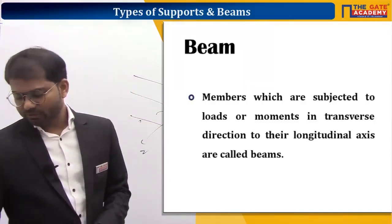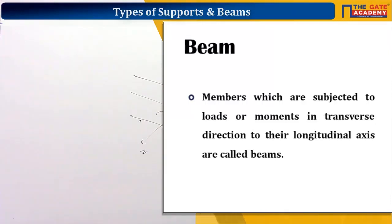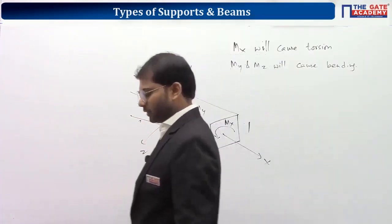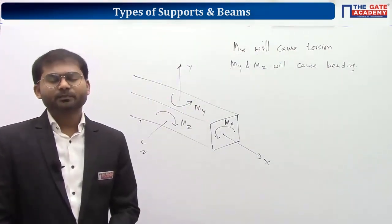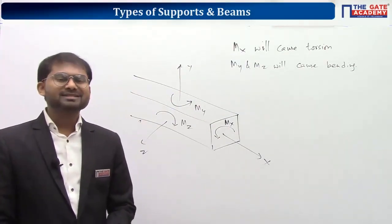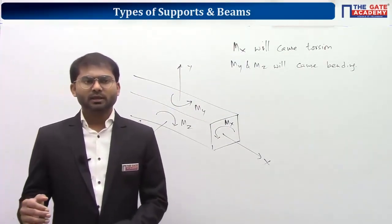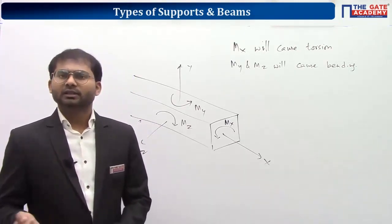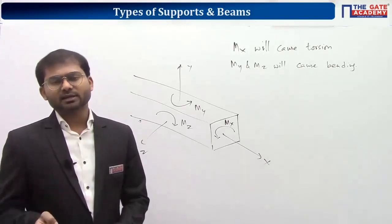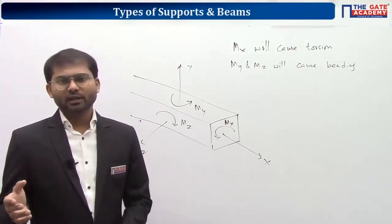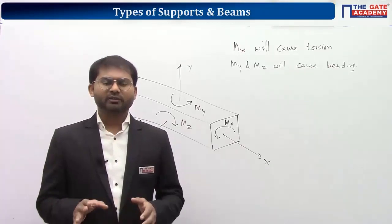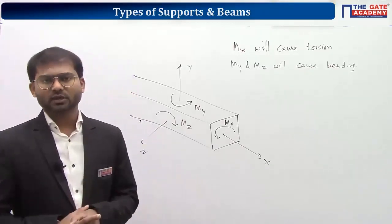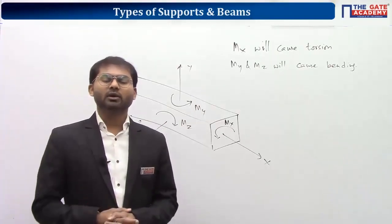The general definition is for our understanding, and the technical definition helps build the concept further. You can copy the diagram on the board — it gives clarity. I would like to show pictures of beams to clear a very common misunderstanding: that a beam should always be horizontal and a column always vertical. There is no such strict rule.